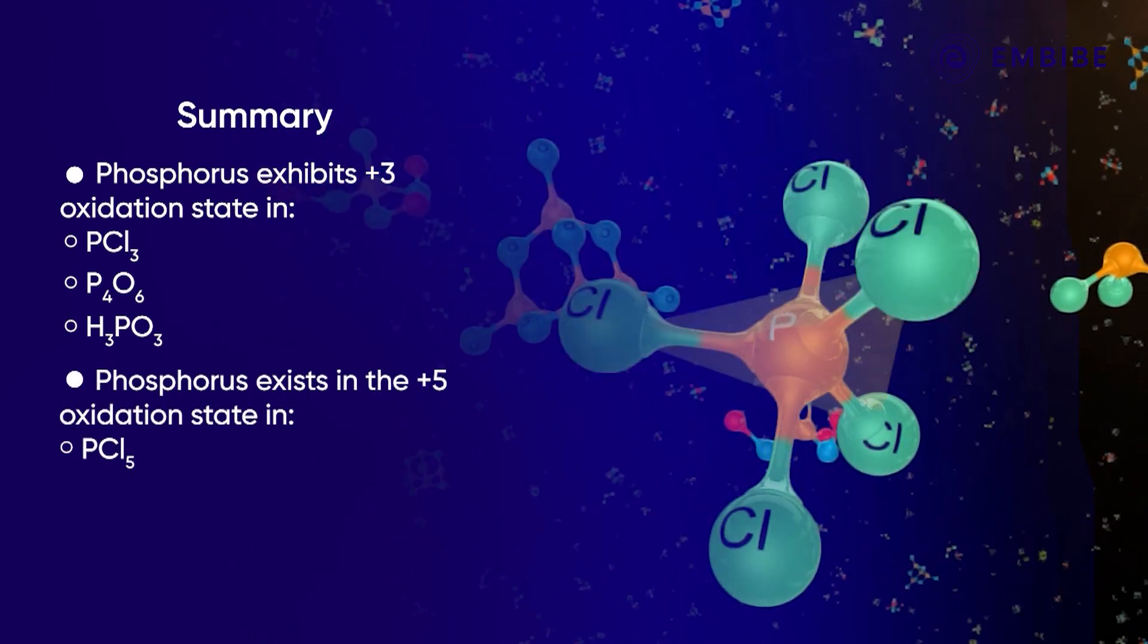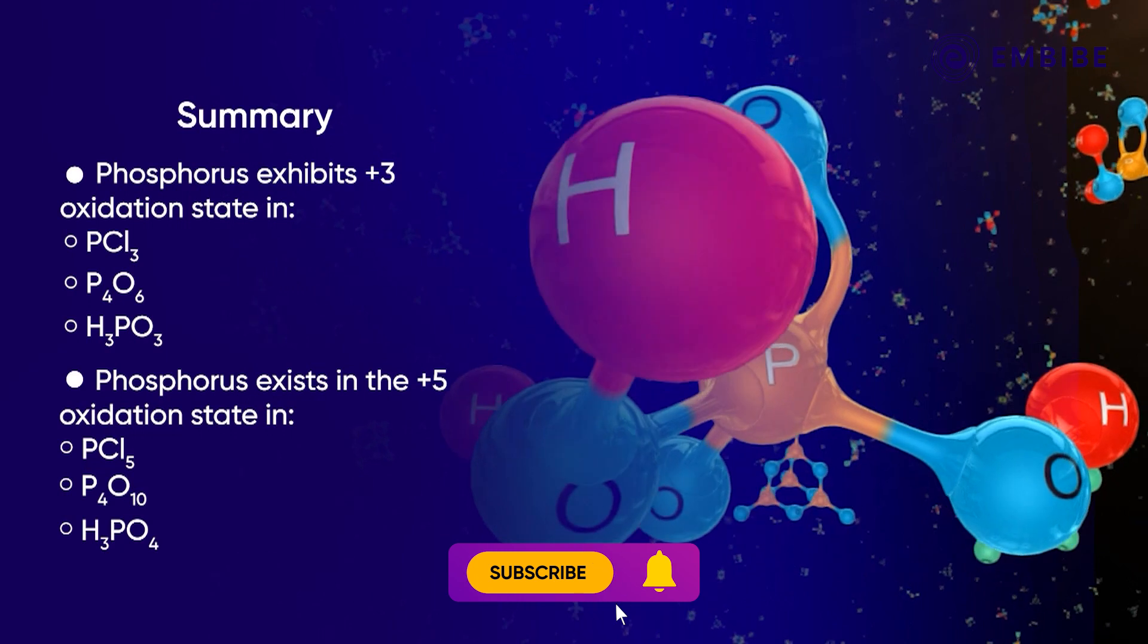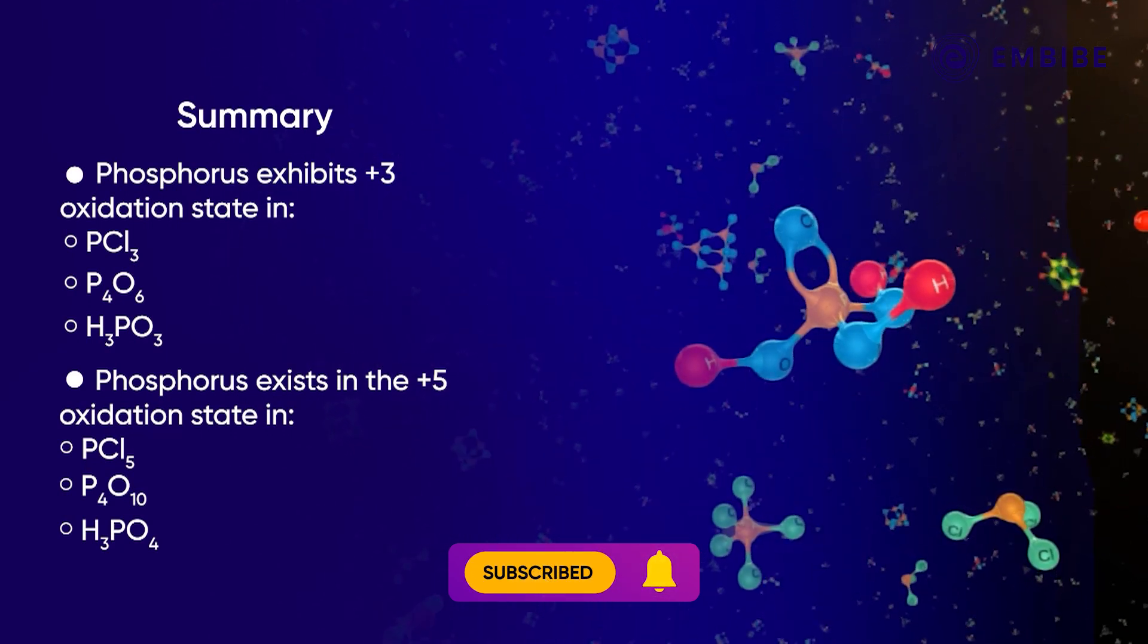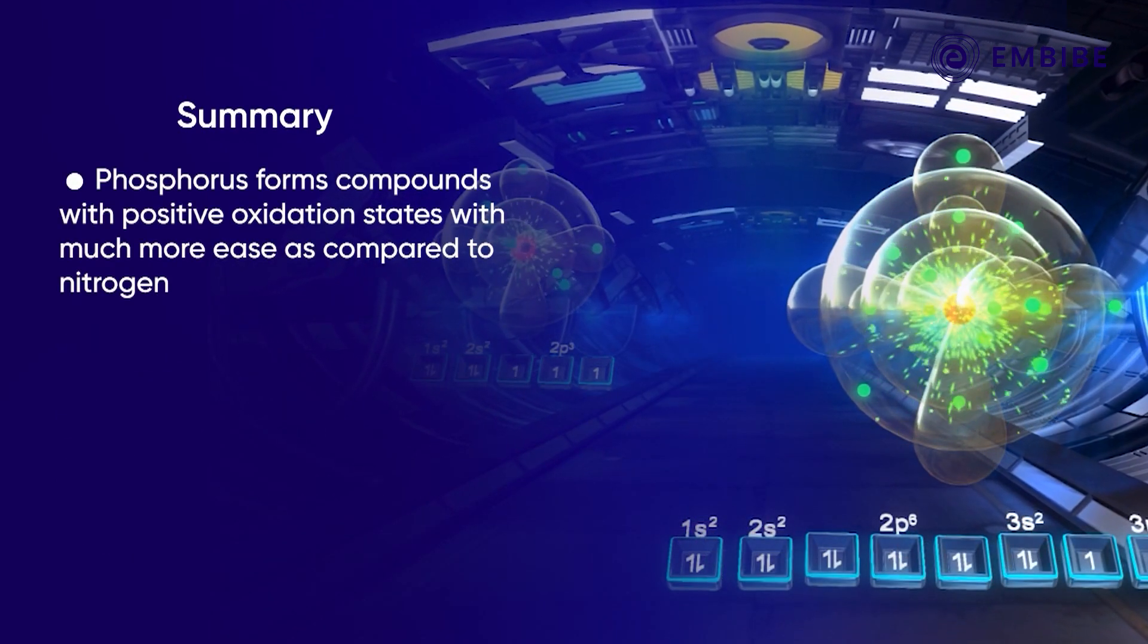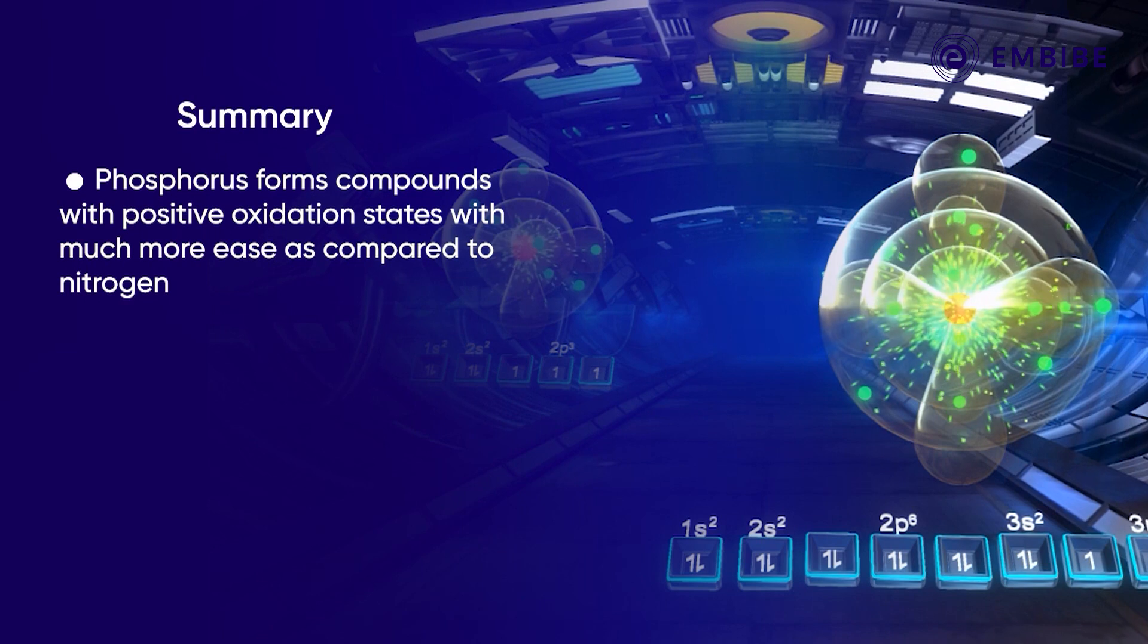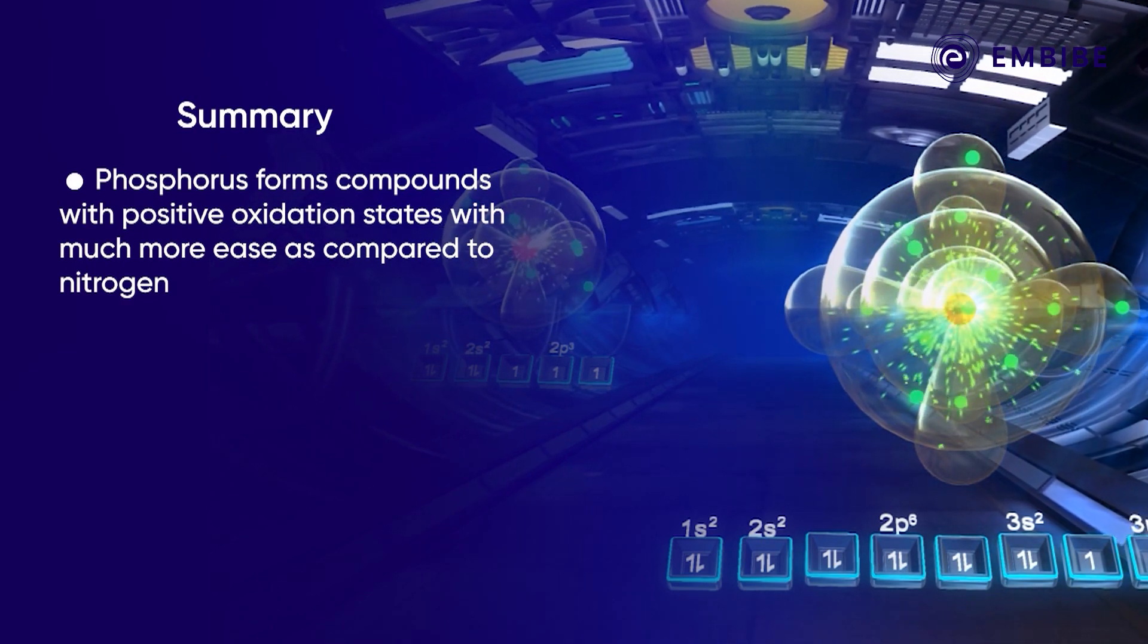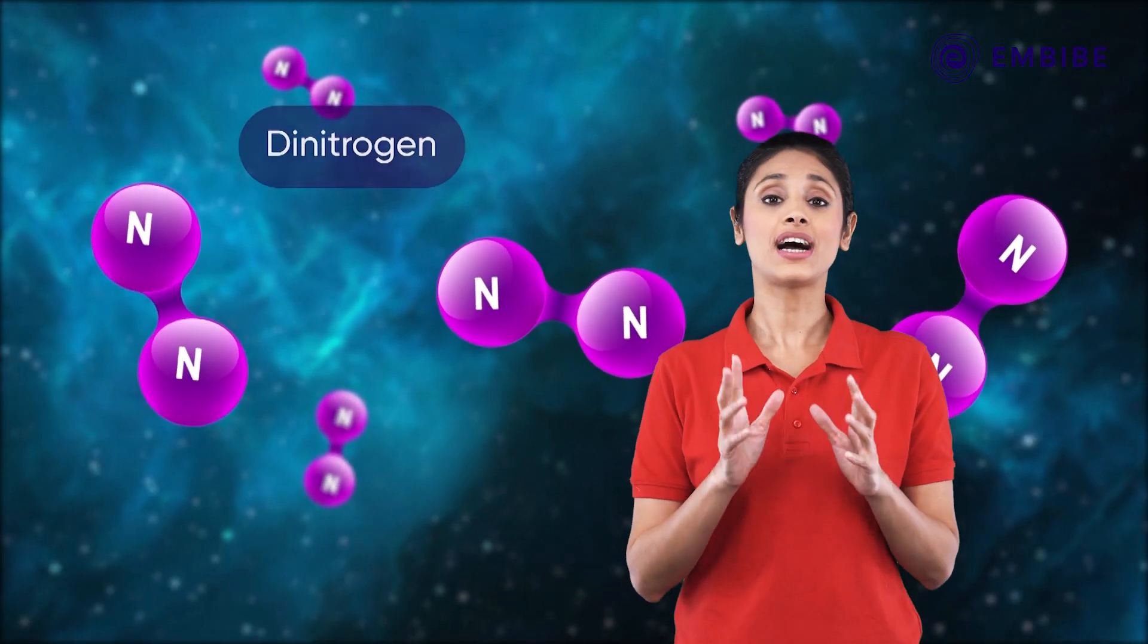And PCl5, P4O10, and H3PO4, in which it exists in the +5 state. We have also seen why phosphorus forms compounds with positive oxidation states with much more ease as compared to nitrogen.